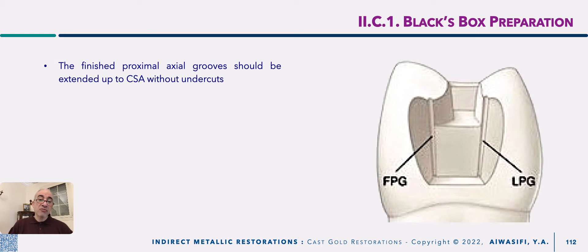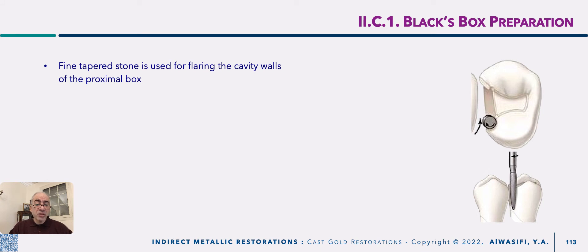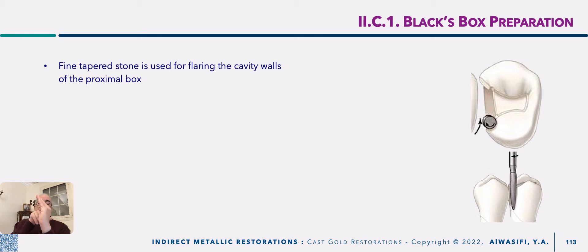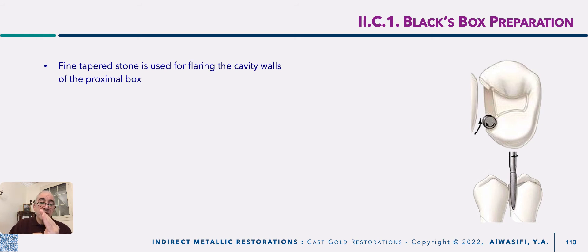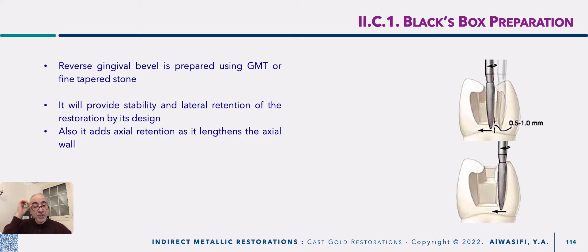Except if you are preparing a box cavity only, sometimes without occlusal extension, sometimes you are in need for these grooves and it will be the only way for lateral retention. Then using a fine tapered stone, you are now in need to flare your proximal cavity — it should be flared as much as possible to avoid any undercuts that will interfere with withdrawal of your wax pattern at the contact area or the area beyond your contact. Because you should remember that your contact area is like this and this is the occlusal embrasure. If you are going to bevel these margins, it will create undercuts for the wax pattern at the level of the remnants of your buccal and lingual walls of the proximal beyond the level of the contact area, so it is better to be flared rather than beveled.